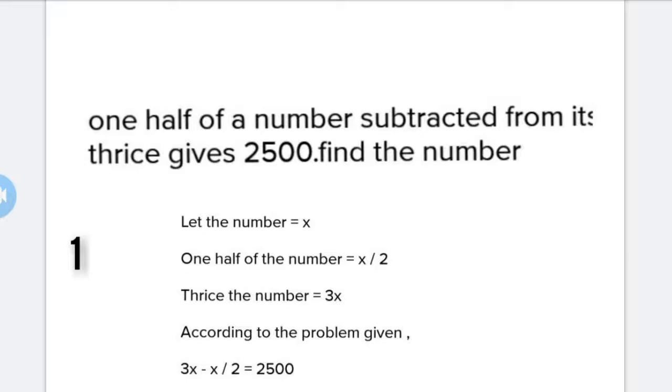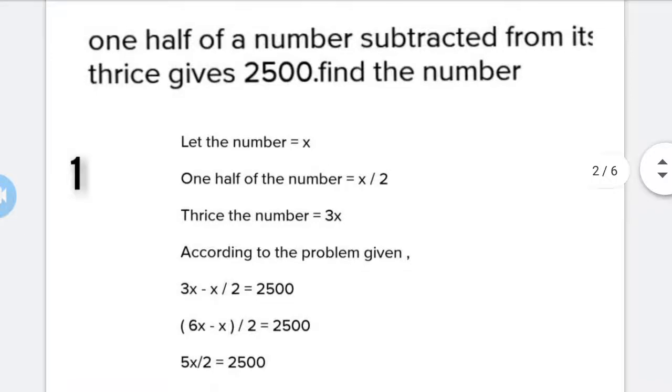Let the number be x. One half of the number equals x/2. Thrice the number equals 3x. According to the problem given, 3x - x/2 = 2500.